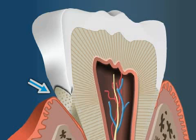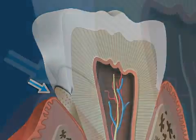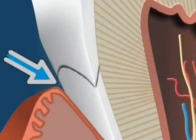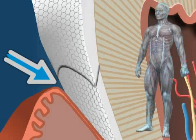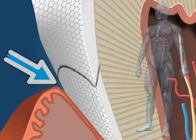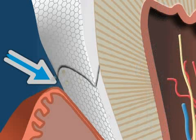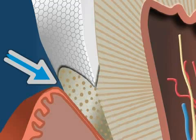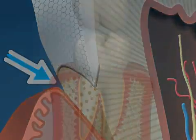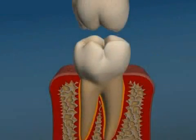Dental enamel is structured similarly to a crystal. The so-called enamel rod crystals, also called enamel prisms, are oriented in a specific geometric pattern. Dental enamel is the hardest substance in the human body. In the enamel cement border area, the geometry of the enamel prisms dissolves, creating weak spots in the enamel at exactly the point where the dental enamel transitions into the root cement.